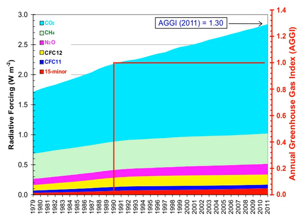If output of this gas into the box ceased, then after time τ its concentration would decrease by about 63%. The atmospheric lifetime of a species therefore measures the time required to restore equilibrium following a sudden increase or decrease in its concentration in the atmosphere. Individual atoms or molecules may be lost or deposited to sinks such as the soil, the oceans and other waters, or vegetation and other biological systems, reducing the excess to background concentrations. The average time taken to achieve this is the mean lifetime.